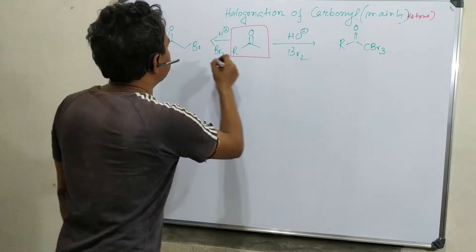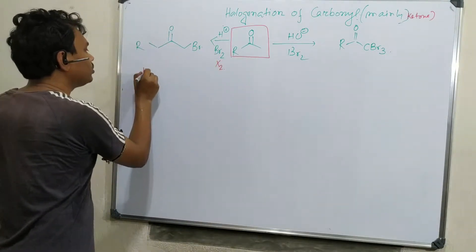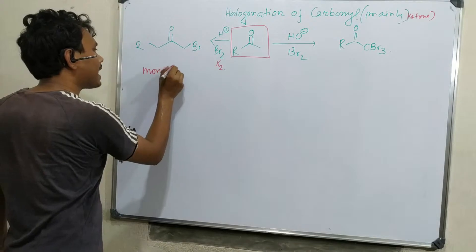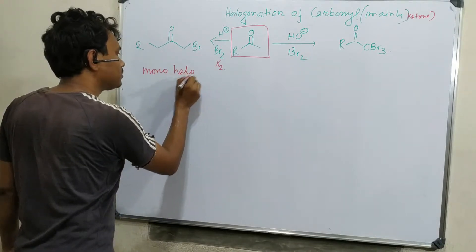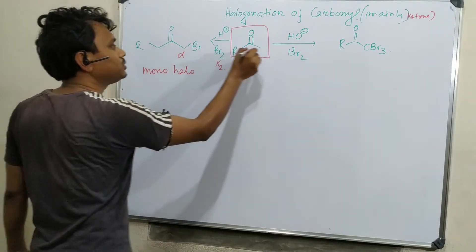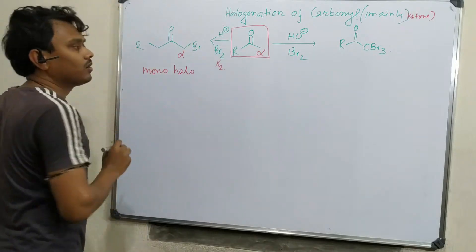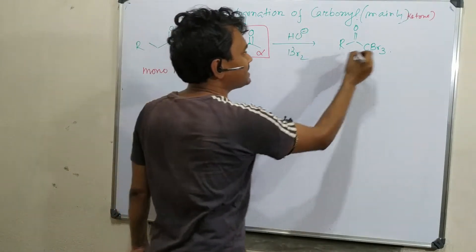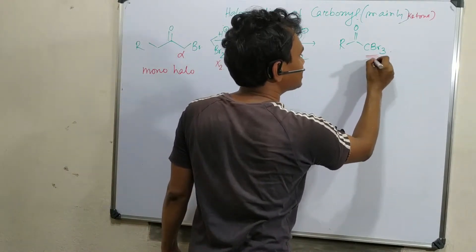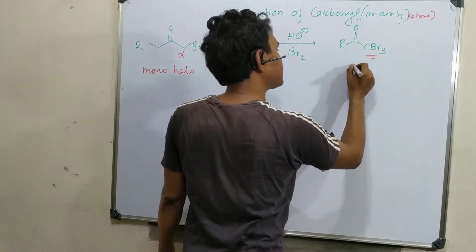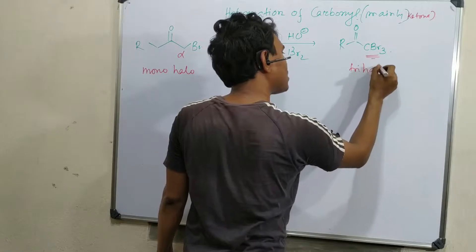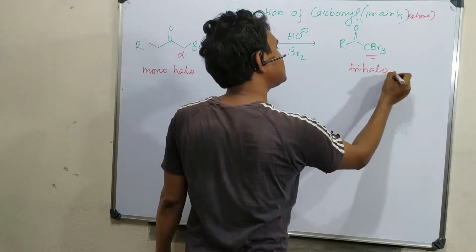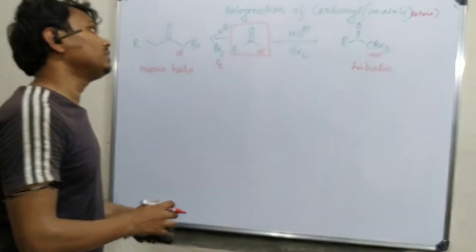This is mainly alpha halogenation. In presence of acid it produces mono-halogenation, and in presence of base it produces trihalogenation. Now we will explain why.